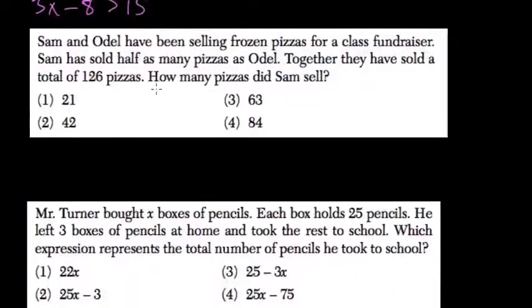Okay, Sam and Odell have been selling frozen pizzas, and Sam sold half as many pizzas as Odell. So whatever Sam sold, it's equal to half the amount that Odell sold. Together, they have sold 126 pizzas. So Sam plus Odell equals 126. How many pizzas does Sam sell?